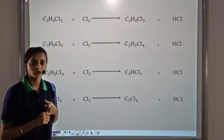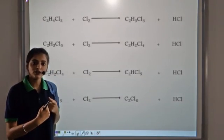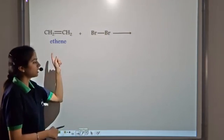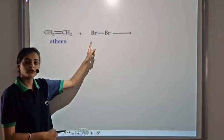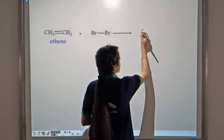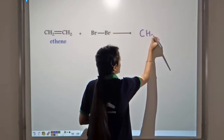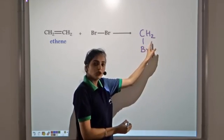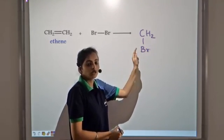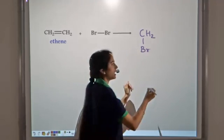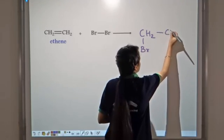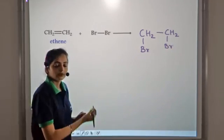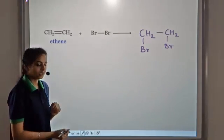All unsaturated hydrocarbons tend to become saturated, and this is done by addition reactions. For another example: ethene reacts with bromine. Again, an addition reaction takes place — the bromine atoms are not replacing any hydrogen atom; instead, they attach to the carbon atoms by the addition reaction, forming a saturated product.